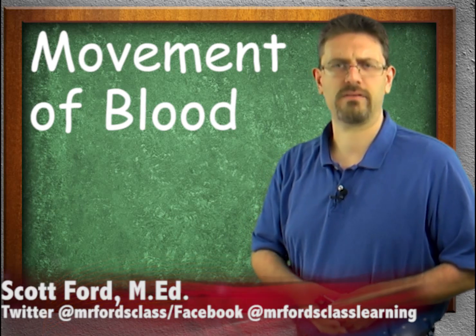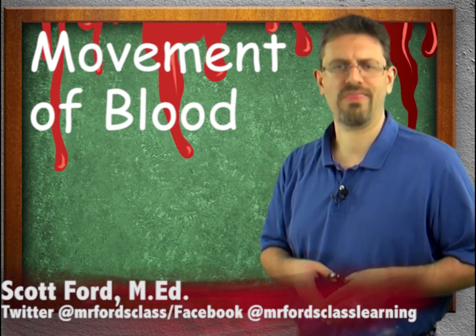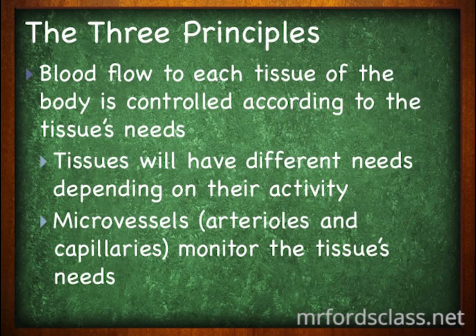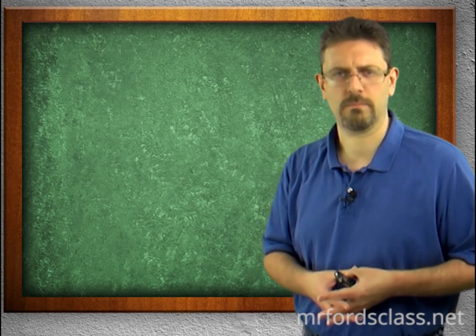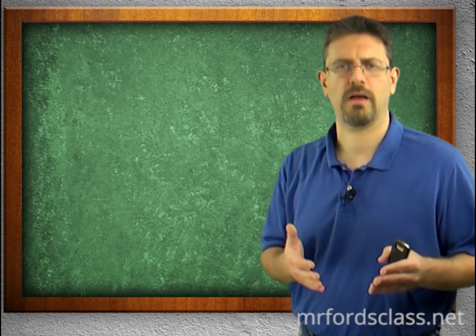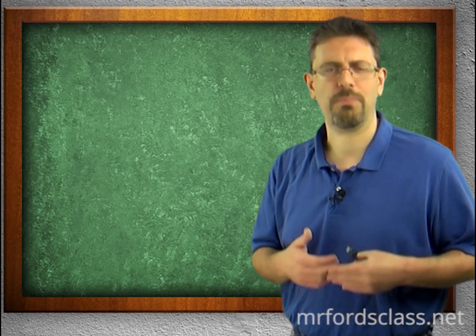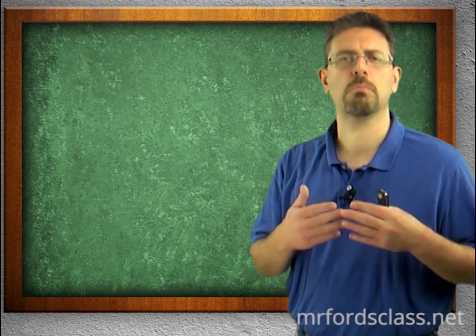In this video we're going to take a look at the movement of blood through the blood vessels. There are three principles that control the major functions of the circulatory system. One: blood flow to each tissue of the body is controlled according to the tissue's needs. The tissues and the micro vessels — the arterioles and capillaries — can figure out how much blood that tissue needs. For example, if you are working out, your skeletal muscle is going to need a lot more blood flow than if you're just sitting on a couch.